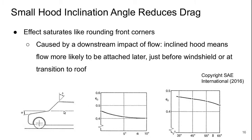Why does this matter at all? Well, this is caused by a downstream impact of the flow. Basically, if I incline this hood it means that the flow is more likely to stay attached later on over the windshield and as it goes up to the roof — that's the benefit. So it's not so much that it matters for the flow on the hood; it matters for what happens next afterwards.